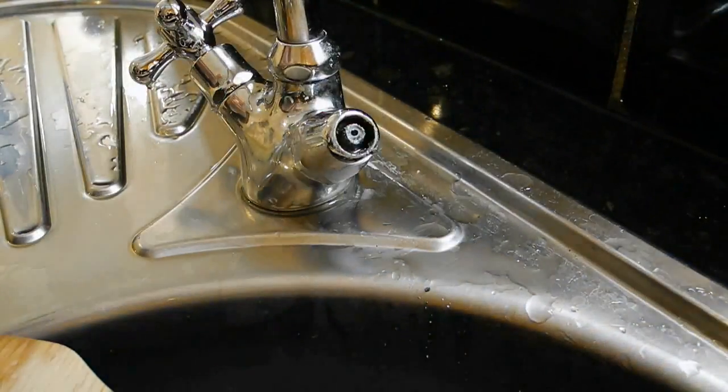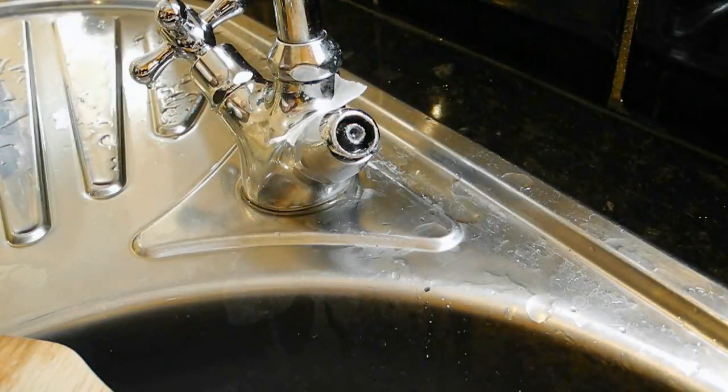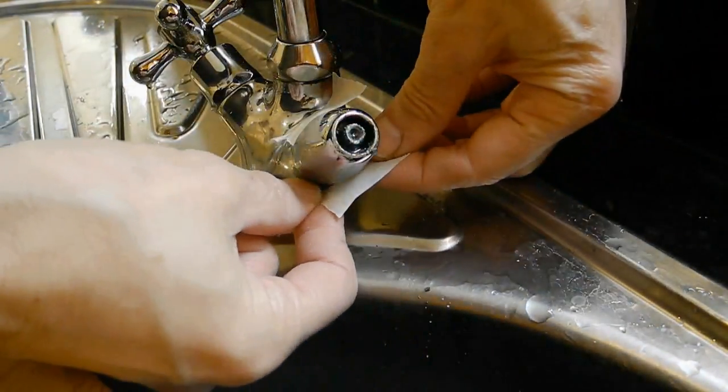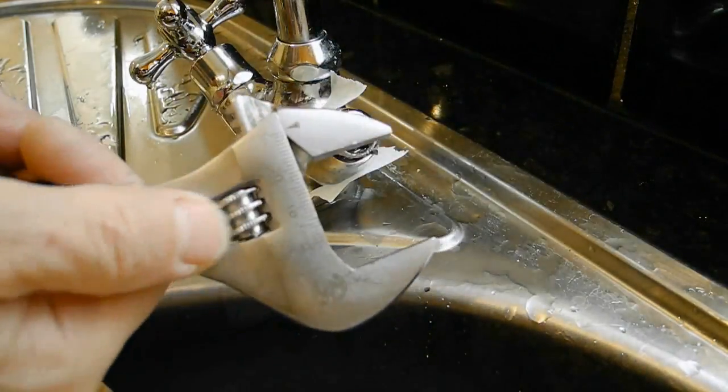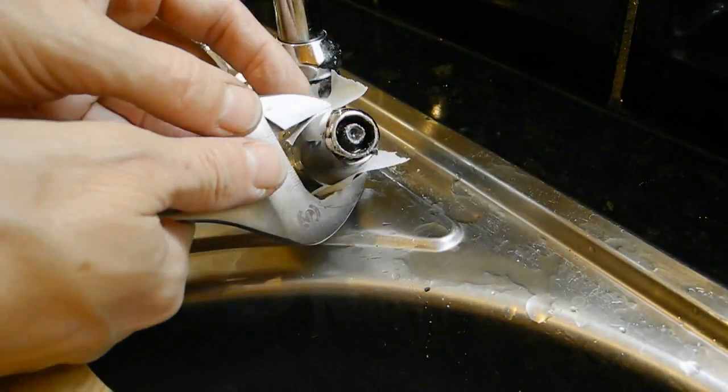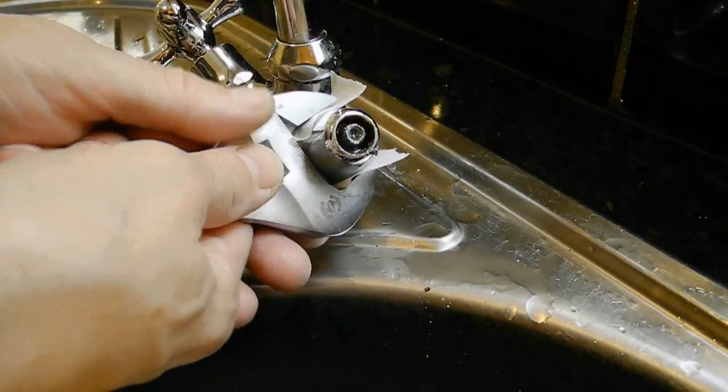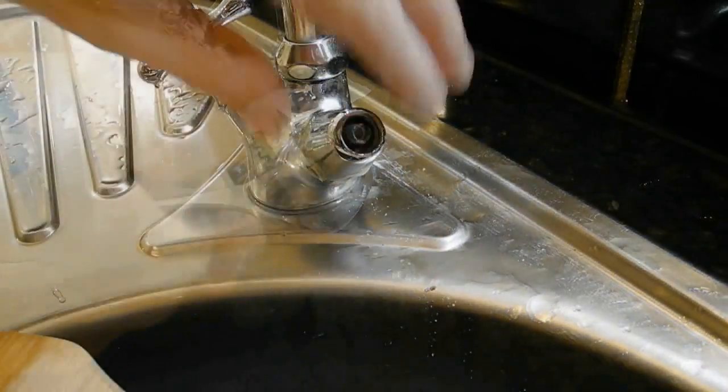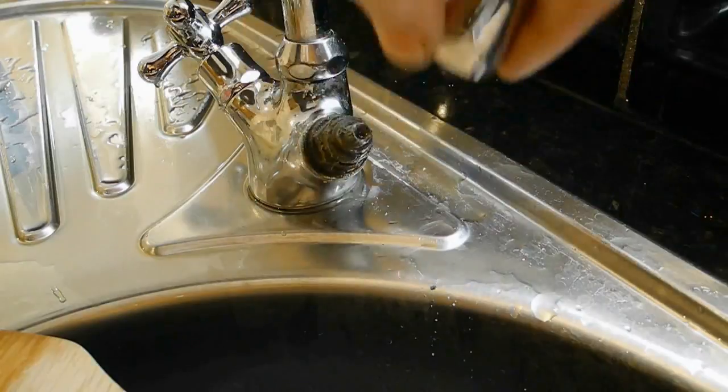Now we have to remove the plastic ring, the white ring that covers our cartridge. We apply some tape to protect this plastic ring from scratching. Sometimes the ring may be plastic or metal. Take it into account when you try to remove it. Gently unscrew it and remove it.